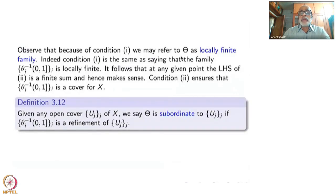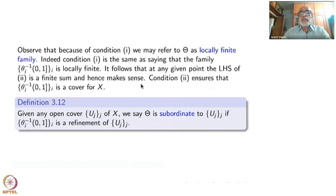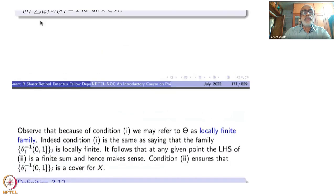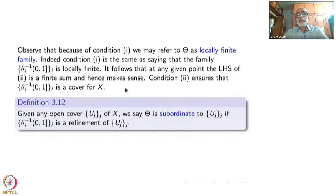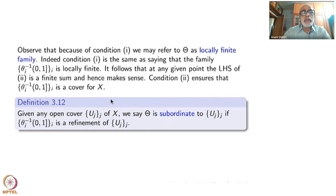Condition 1 we may refer to as θ being locally finite. Condition 1 is the same as saying that the family θ_i inverse of (0,1] — these open subsets of X — that family is locally finite. It follows that at any given point the left-hand side sum is a finite sum and hence makes sense. Condition 2 ensures that the sum total equals 1, meaning this open family must be a cover for X. Every x must belong to something; if it is not in any of them, then the sum total would have been 0.